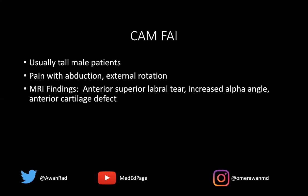We may see an increased alpha angle, which is measured on axial oblique MRI images. If it measures more than 55 degrees, that's suggestive of CAM-type FAI. There will often be an anterior cartilage defect along the acetabulum or femoral head. CAM-type FAI is often treated conservatively, but if severe or in an elite athlete, they may require a femoroplasty, which shaves off the osseous protuberance at the femoral head and neck junction.